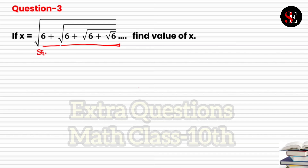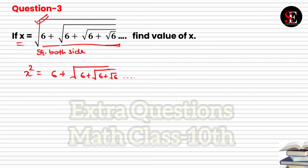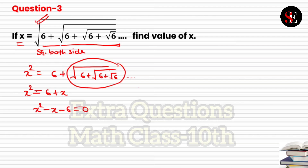Question 3 looks big but is actually quite easy. First, square both sides — the square root gets removed. We get 6 outside, and whatever is written under the root continues as it is, because the number is written continuously. Since this nested radical equals x, we can write x² = 6 + x, which gives us the quadratic equation x² − x − 6 = 0. Solve this using factorization — middle term splitting.